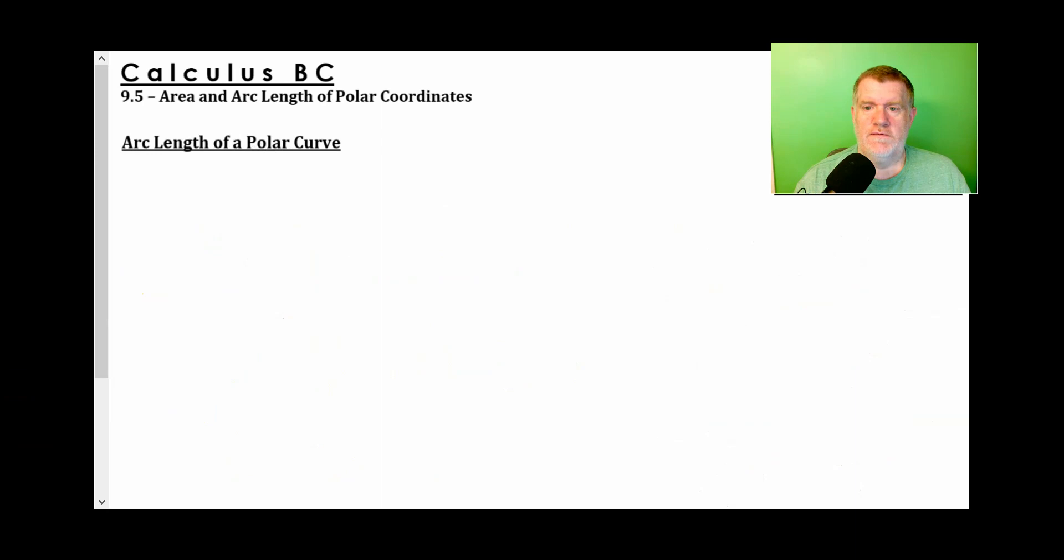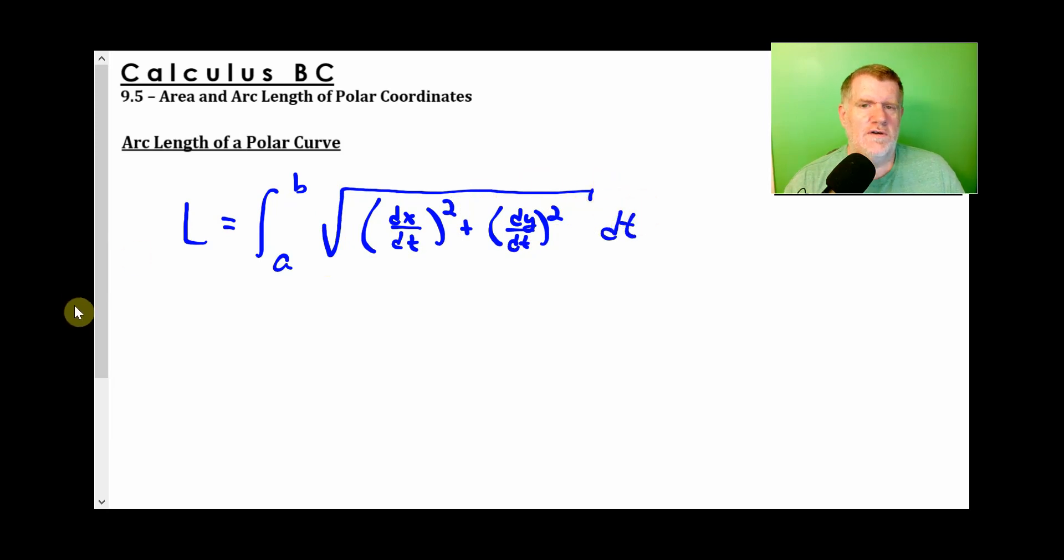We have one last problem and one last topic: the arc length of a polar curve. Now this is interesting. I'm not going to take the time to show you because it's lengthy, but not difficult. If you remember, we had a parametric equation, just like this formula. It was the change of x over time squared plus the change of y over time squared. Because really it's a Pythagorean theorem or distance formula, delta x squared, delta y squared, but we're taking all of them.